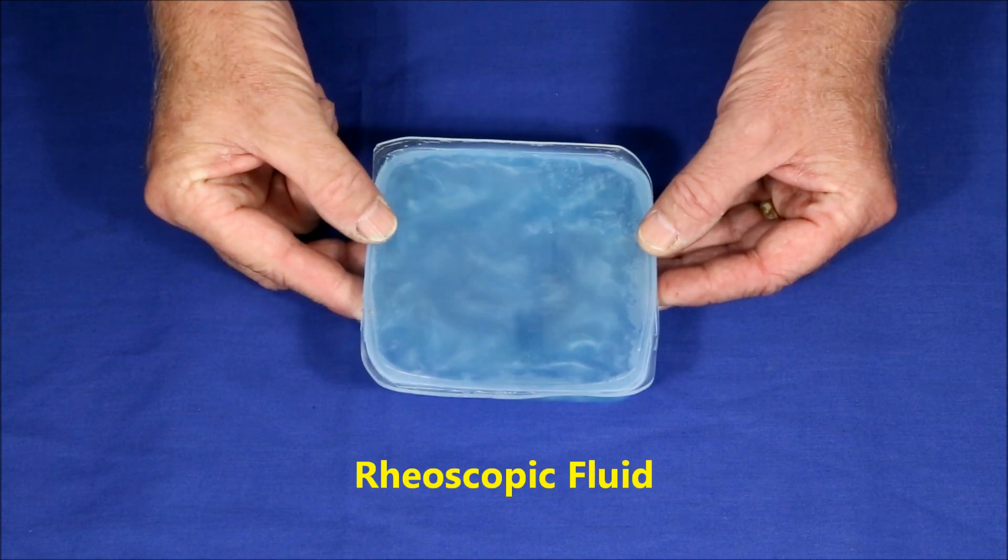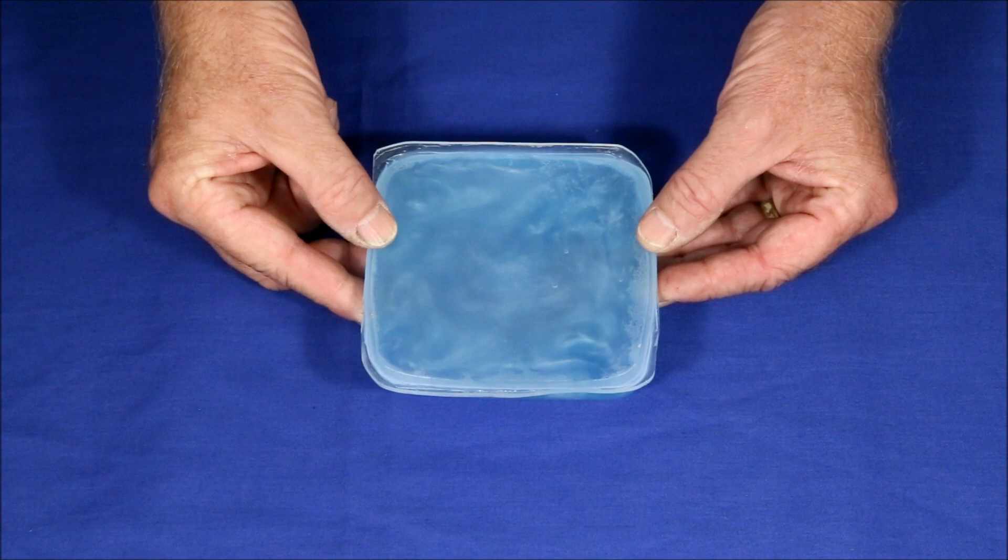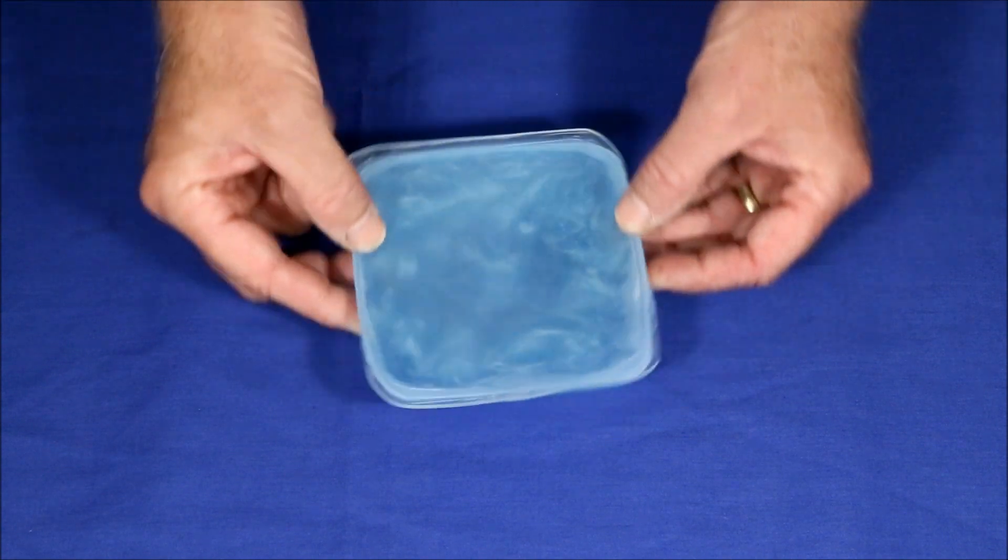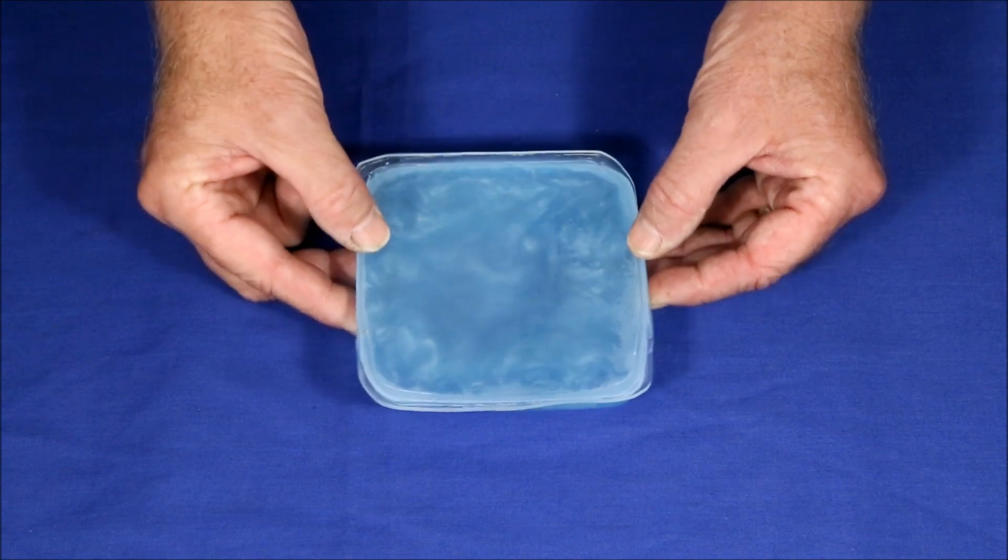Rayoscopic fluid is a fancy name for water filled with a little powdered mica. The flat pieces of mica align themselves in the direction of local fluid motion and make it easy to see currents and eddies.